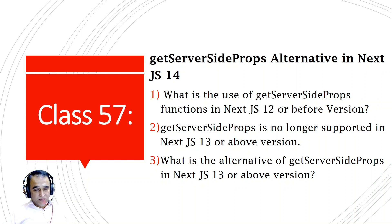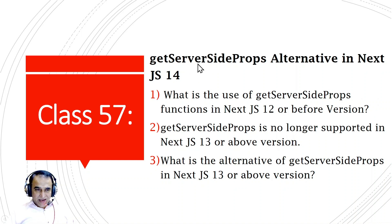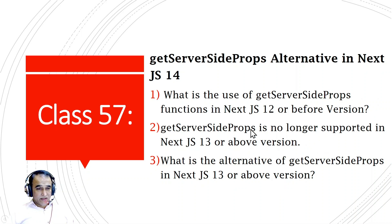The getServerSideProps function is used for server-side rendering or dynamic rendering in Next.js 14. In a previous video I also explained how to do dynamic rendering in Next.js, but now regarding the getServerSideProps function, I want to explain what this function is, why it is not used nowadays, and what the alternative is. The role of getServerSideProps is to achieve server-side rendering.